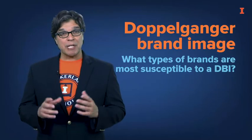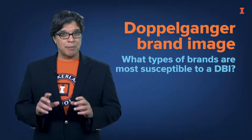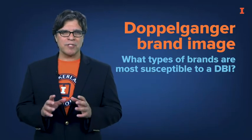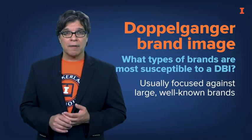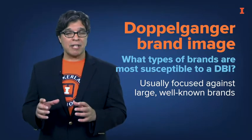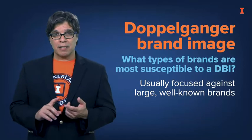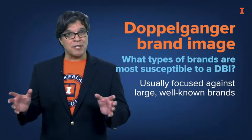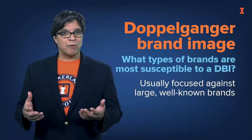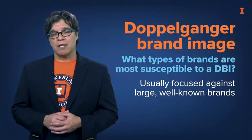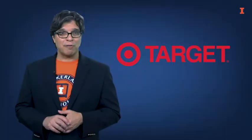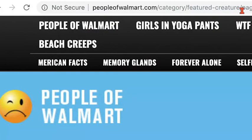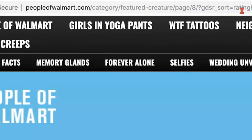Second, what types of brands are most susceptible to a DBI? Typically, most doppelganger images are focused against large, well-known brands. These brands have a high degree of awareness and familiarity, which means that their business practices are more likely to come to the attention of anti-brand activists. In addition, doppelganger campaigns targeted against bigger brands are likely to get more attention for their creators. Thus, Walmart has several anti-branding doppelganger initiatives aimed against it, while Target has far fewer. For example, there are dozens of 'People of Walmart' viral videos floating around that get millions of views, but there are very few 'People of Target' videos.